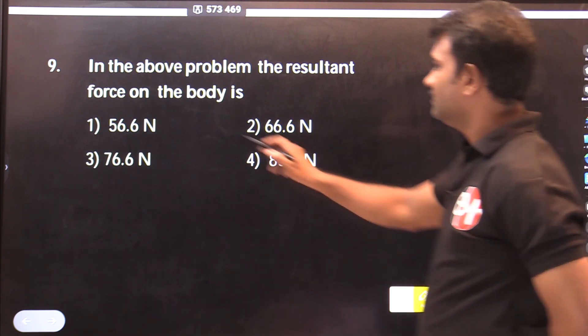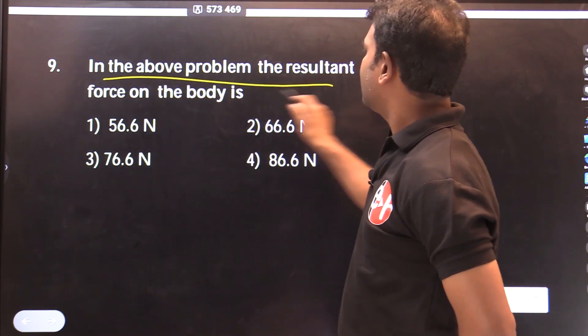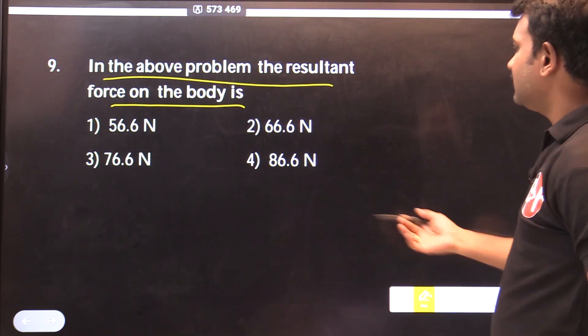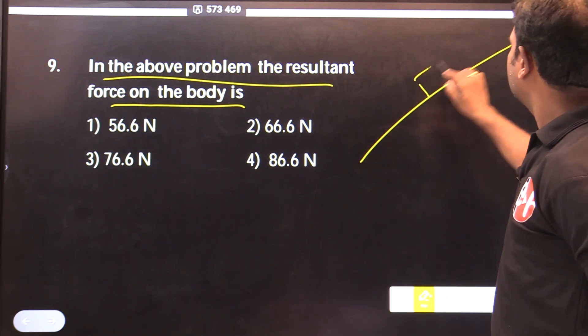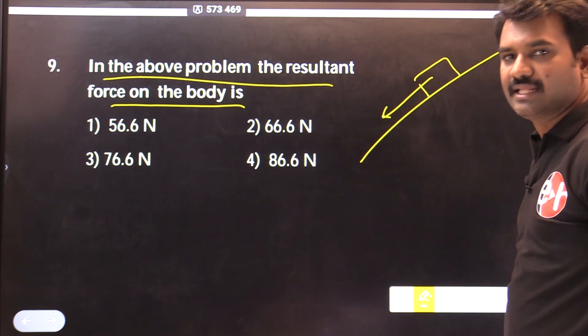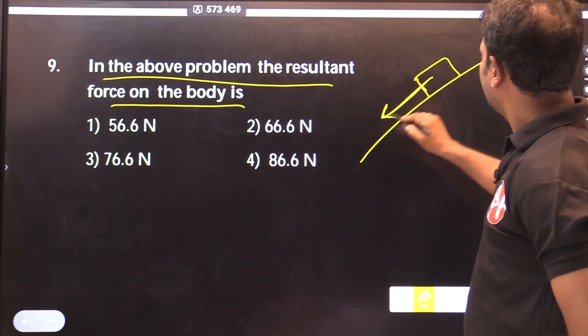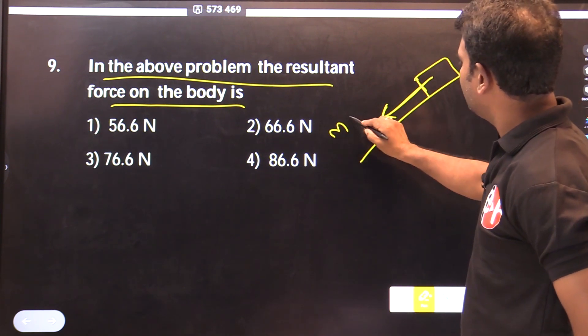This is the question. In the above problem, the resultant force on the body is. Body mass is 10kg, resultant force. So the body slides down, force equals m into g sin theta minus friction force.